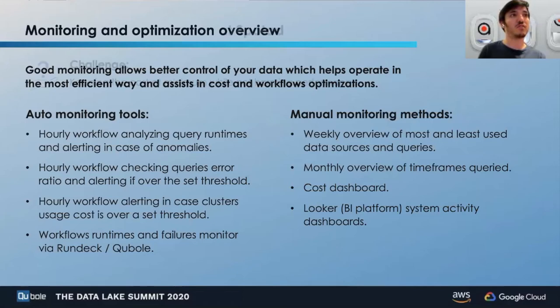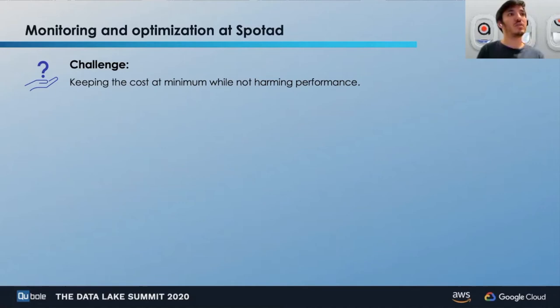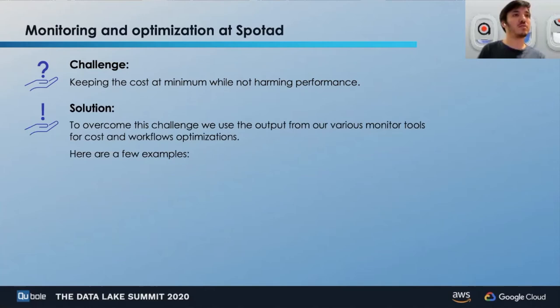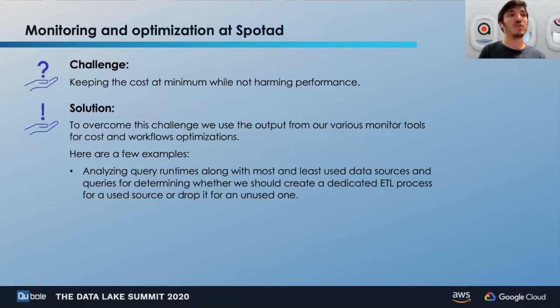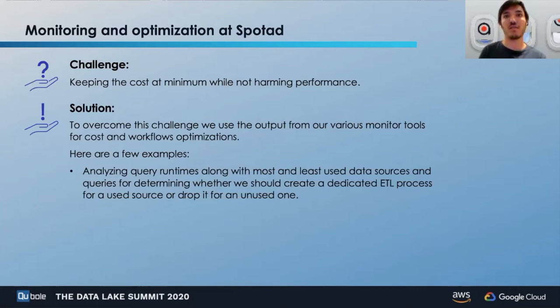Our first challenge under monitoring and optimization is how to keep cost at minimum while maintaining best performance. We solve this by using the output from the various monitor tools for cost and workflow optimizations. The first example is something we do on a weekly basis: analyzing query runtimes along with the most frequently accessed data sources. This is done to determine whether we should create a dedicated scheduled ETL process for a frequently used data source, or drop it for an unused one. There is a trade-off between the cost of creating a scheduled dedicated ETL process and the performance improvement acquired.